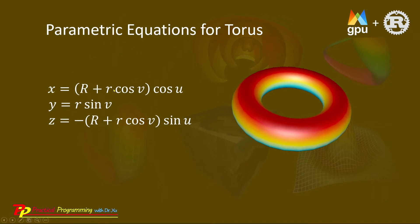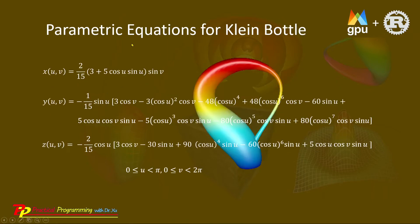Here is the definition of the torus parametric functions. The large R represents the radius from the center to the torus radius. The small r represents the radius of the torus ring. Here u and v are parametric variables.